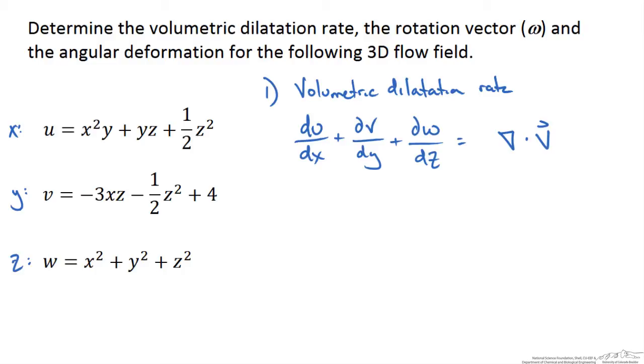To proceed we take the derivative of the velocity in the x direction with respect to x. So du/dx is equal to 2xy, dv/dy is equal to zero, and lastly dw/dz is equal to 2z. This means our volumetric dilatation rate is equal to 2xy plus 2z, which shows us that this is not equal to zero and therefore it is not an incompressible fluid.